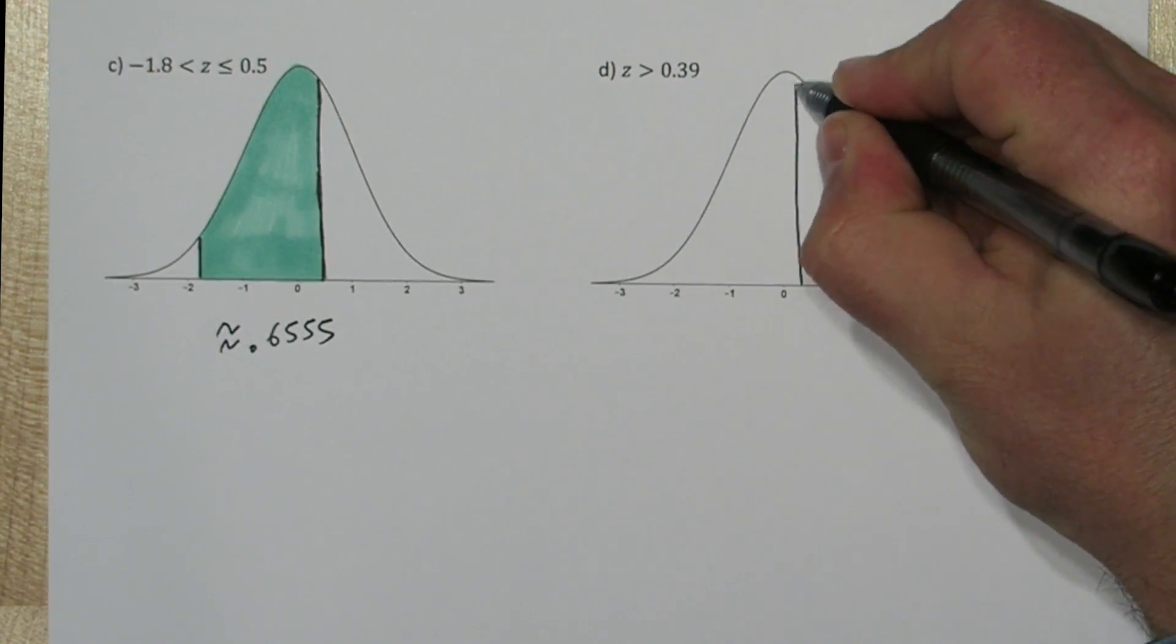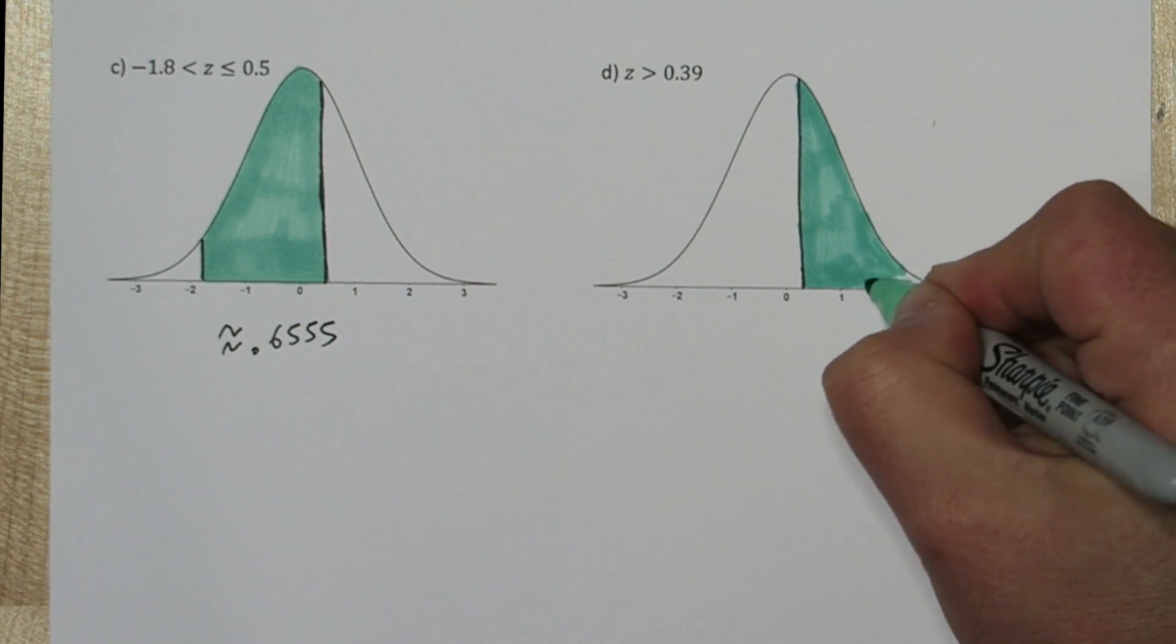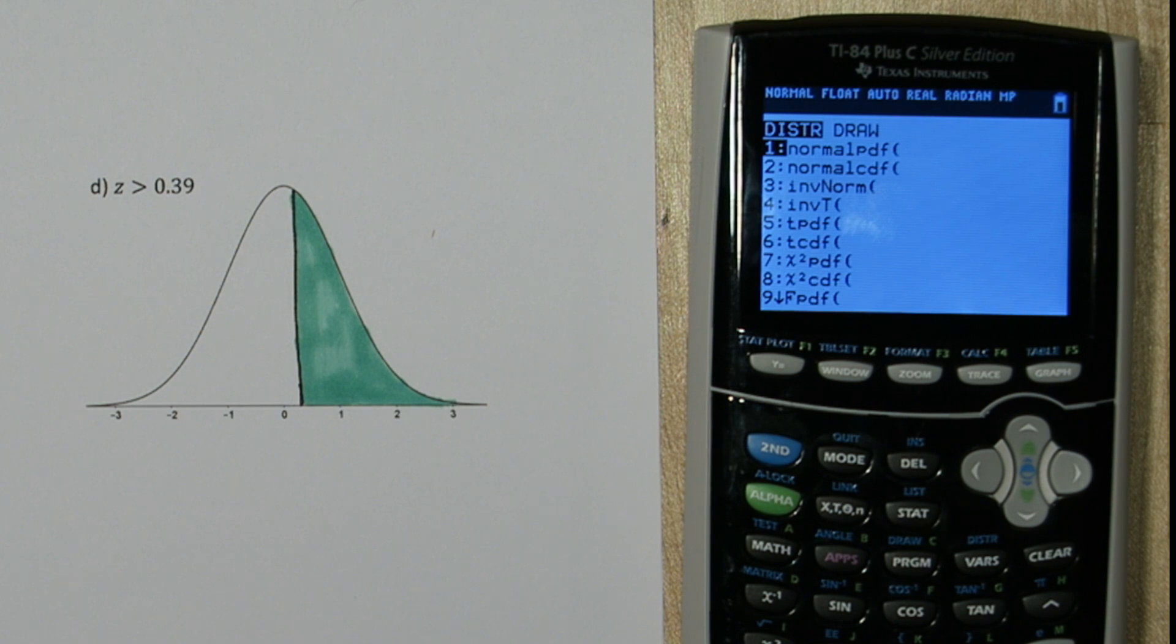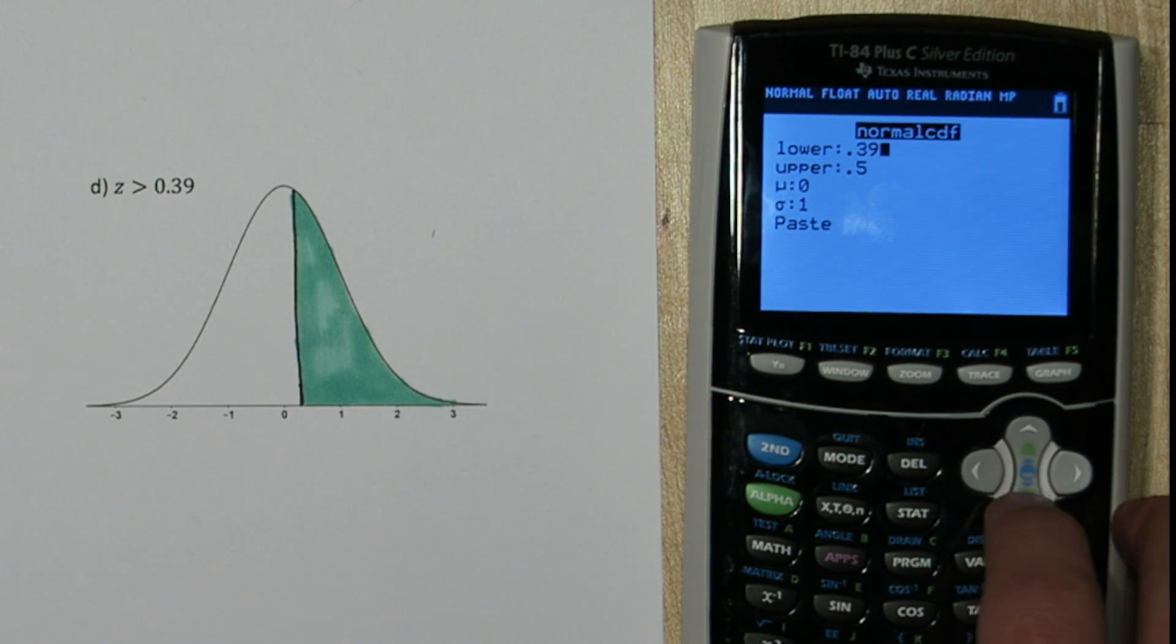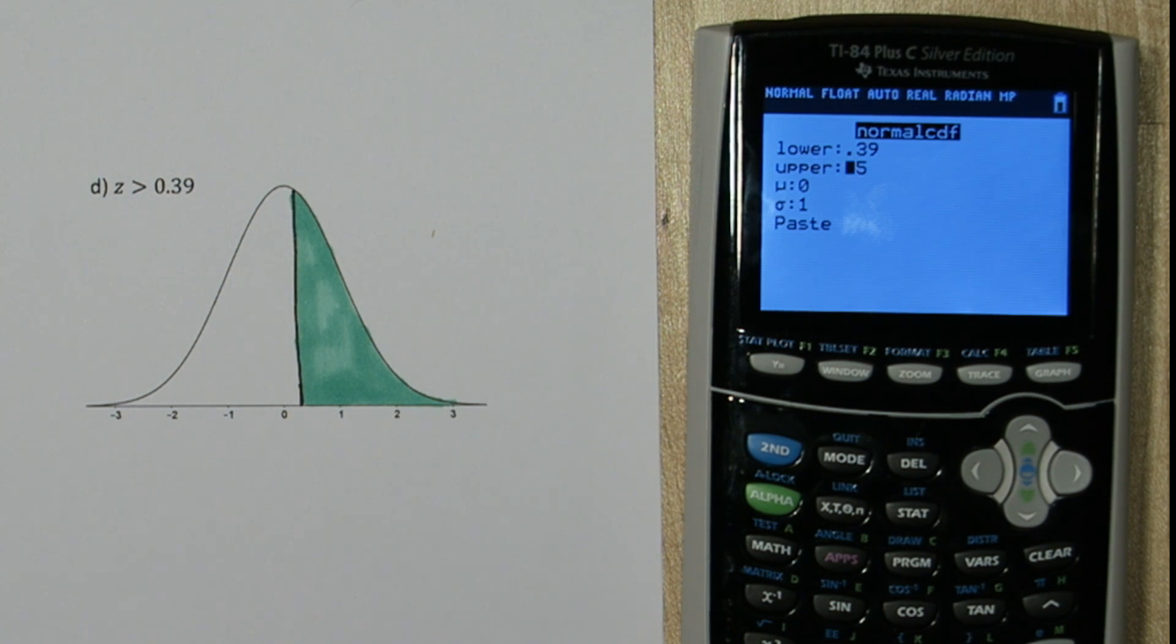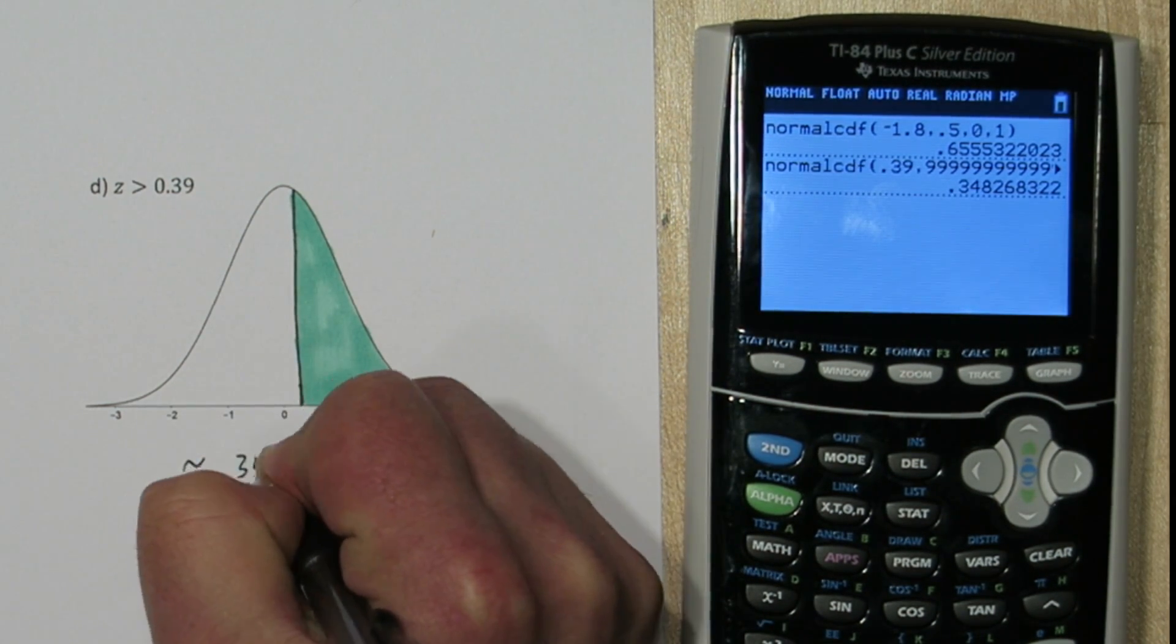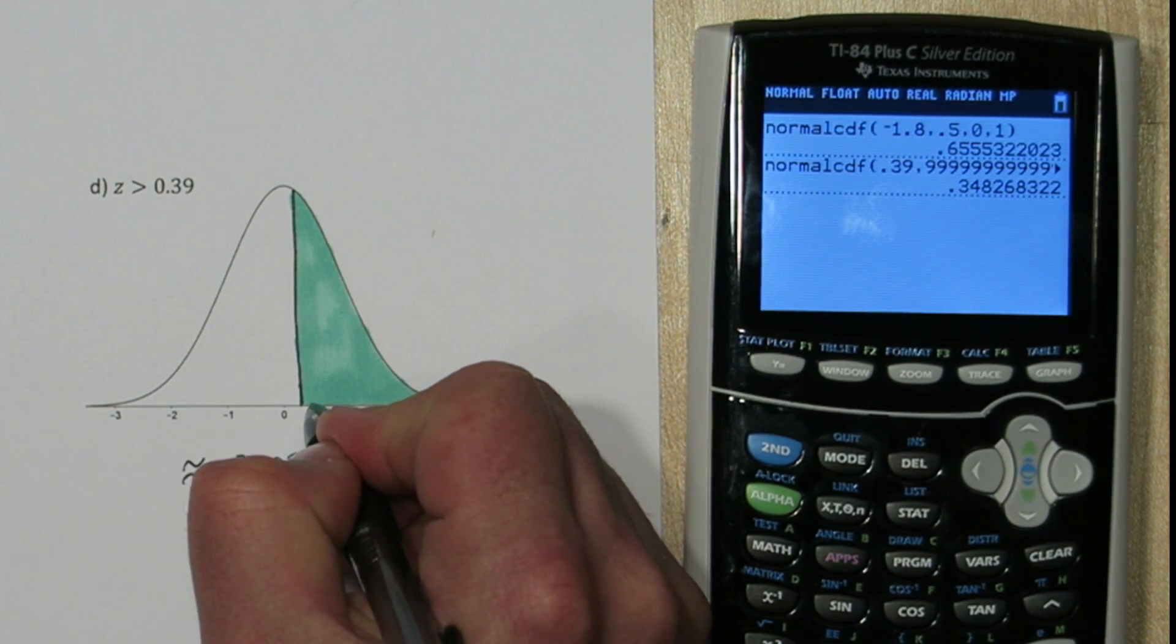On the last one, we want greater than 0.39. That's about right here. And greater than is everything to the right. So we're going to press 2nd, VARS again, to get to the distribution menu one last time. We'll select normalcdf. Our lower limit is 0.39, and for upper limit, we don't have one. It's supposed to go on forever. So we're just going to put a bunch of positive nines right here. And this time our area is about 0.3483. Which, looking at my sketch, I think I may have shaded a little bit too far to the left. 0.39 is probably more about there.